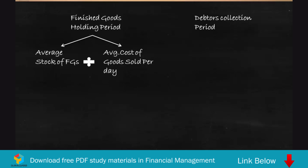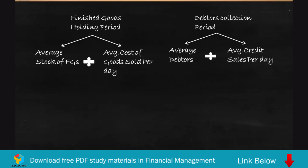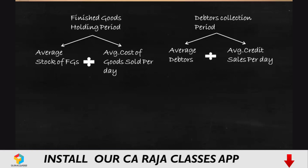Next, let's see how to find the debtors collection period — that is, how many days you take to collect sales from your customers. This is calculated as average debtors divided by average credit sales per day. Average credit sales per day is computed by identifying credit sales from total sales and dividing by number of days.